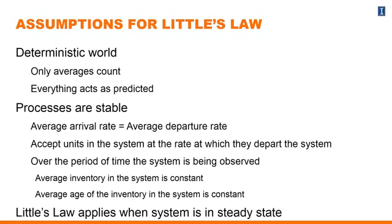Another assumption is that the arrival rate equals the departure rate — the number of units that enter the system equals the units that exit the system. Every unit that enters exits the system; there's no yield loss. For example, thinking about a security line at an airport: the arrival rate of people joining the line will equal the rate at which they leave to go to their aircraft. People who join the line first leave the line first — it's a first-in, first-out system.